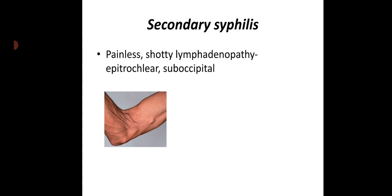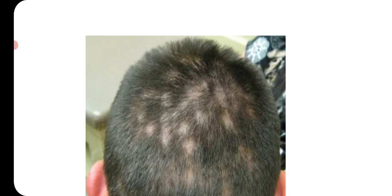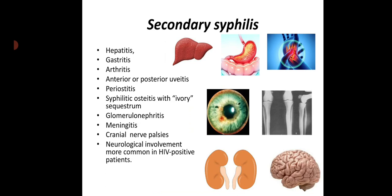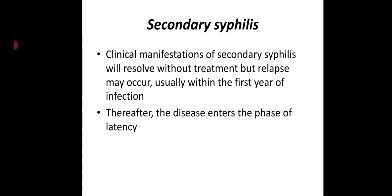There can also be epitrochlear and suboccipital lymphadenopathy, which are painless and shotty. Moth-eaten alopecia occurs in secondary syphilis. Other features include hepatitis, gastritis, arthritis, anterior or posterior uveitis, periostitis, syphilitic osteitis with ivory sequestrum, glomerulonephritis, meningitis, and cranial nerve palsies. Neurological involvement is more common in HIV-positive patients.